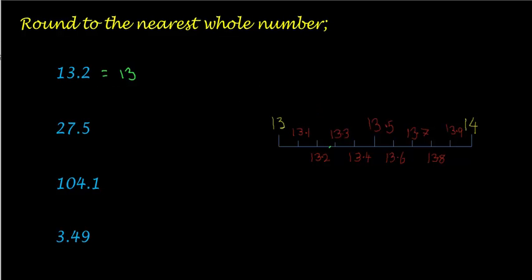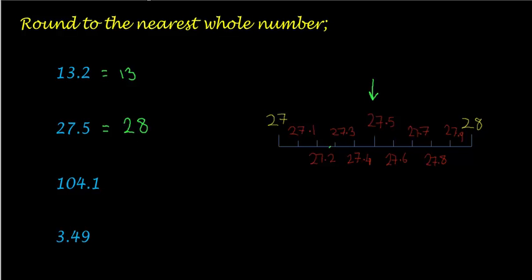Let's try 27.5. I'll lose those numbers and put in some values for 27.5. Now, 27.5 is exactly halfway between 27 and 28. But as we said earlier, we round generously—five and above we round up, below five we round down. So 27.5 rounds to the nearest whole number to 28. That wasn't too bad.